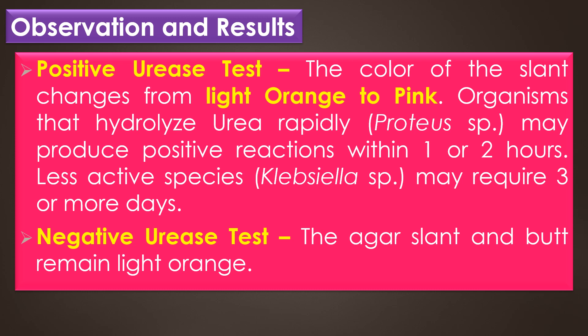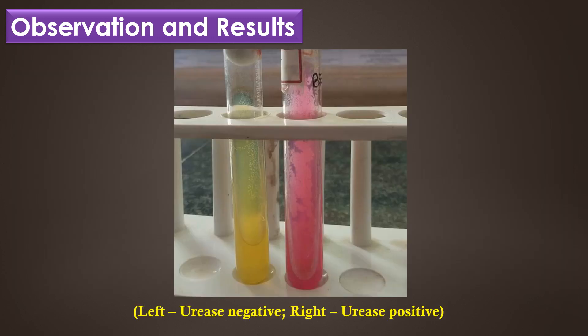Less active species like Klebsiella species may require 3 or more days. In routine diagnostic laboratories, the urease test result is read within 24 hours. In a negative urease test, the agar slant and butt remains light orange — that is, the medium retains its original color. This image shows the urease positive and urease negative slants. The left side slant shows the urease negative slant, and the right side slant shows the pink color urease positive slant.